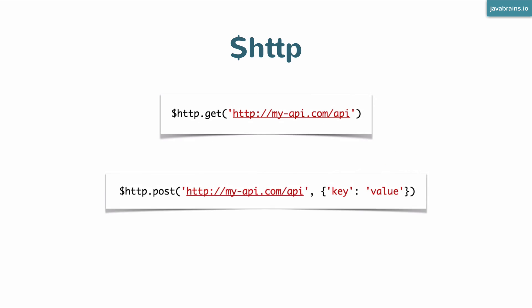Now, how about a POST request? There is a .post — $http.post. This is going to take two arguments. The first argument is the URL to which you want to POST. The second argument is the JSON body that goes as a request body in your POST request. When you make a POST, you usually have a POST body that gets sent, so this lets you send any JSON object in the payload in the POST body using the second argument.